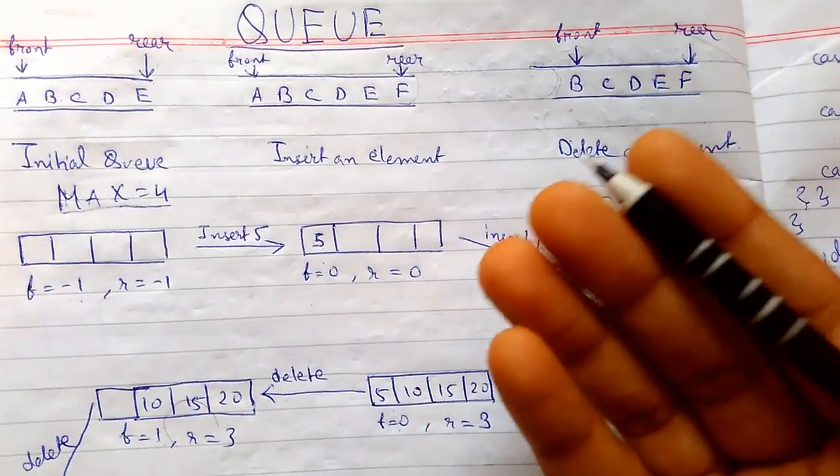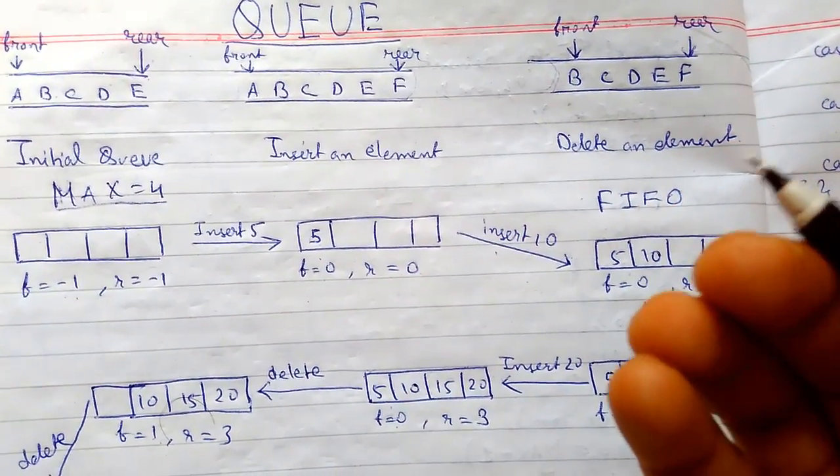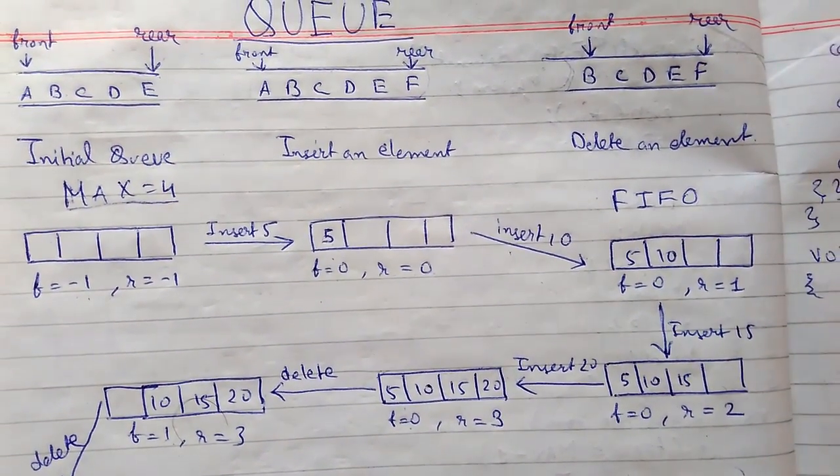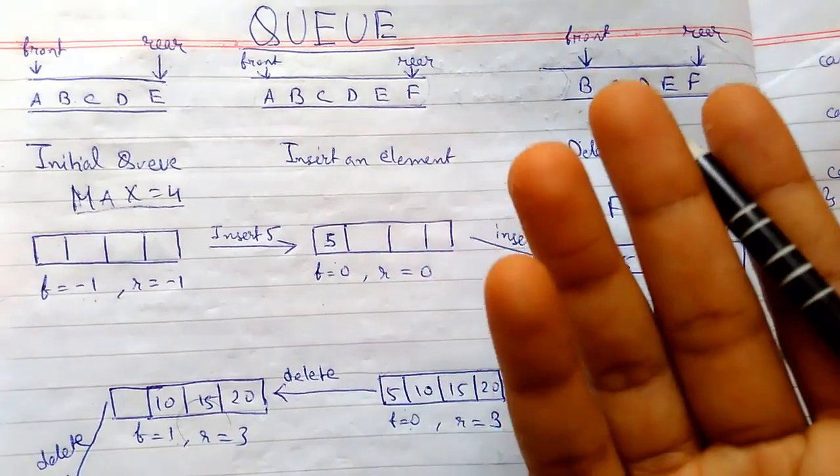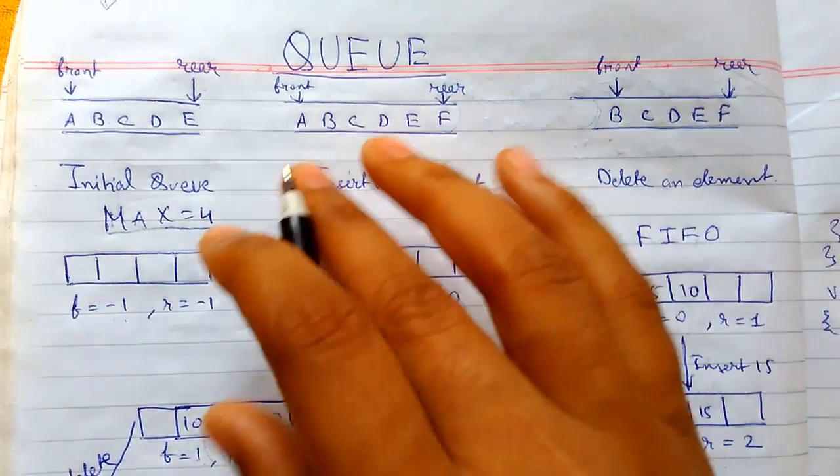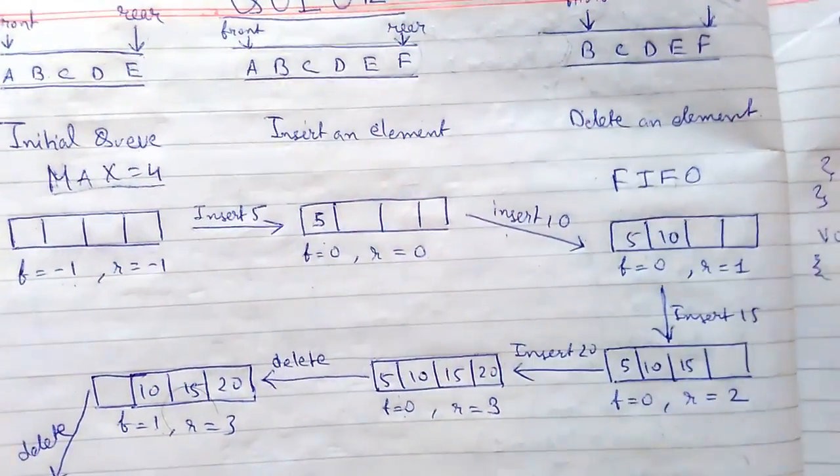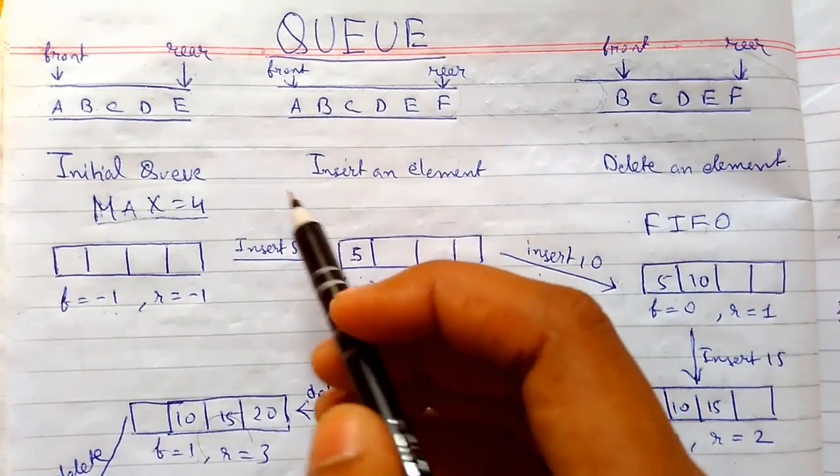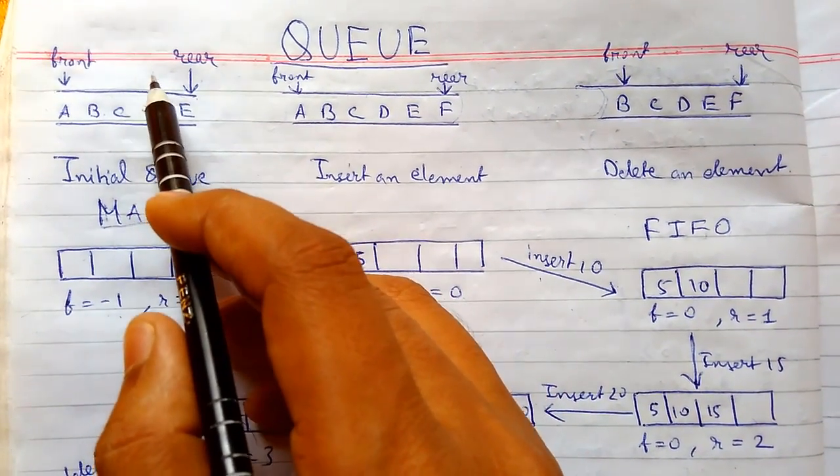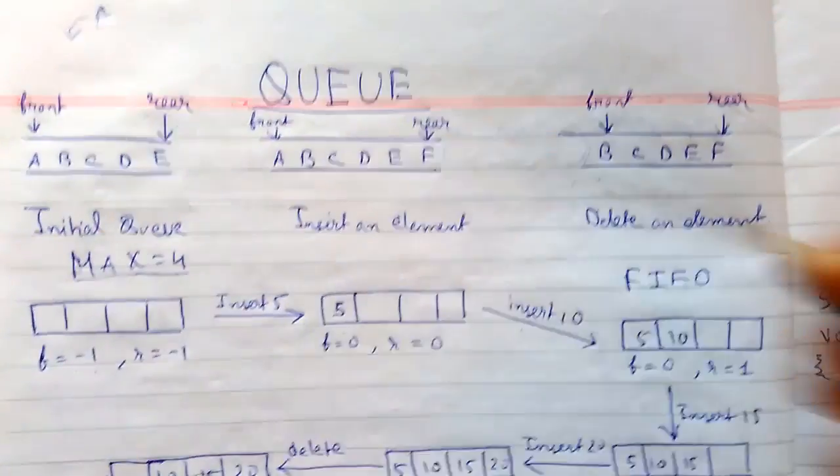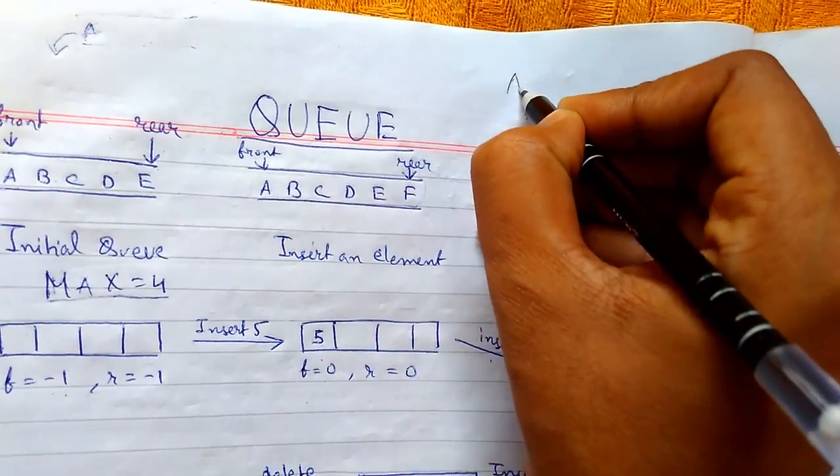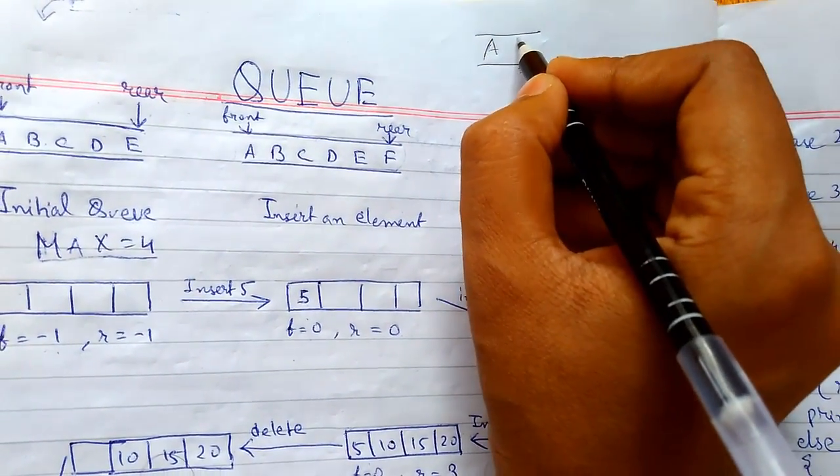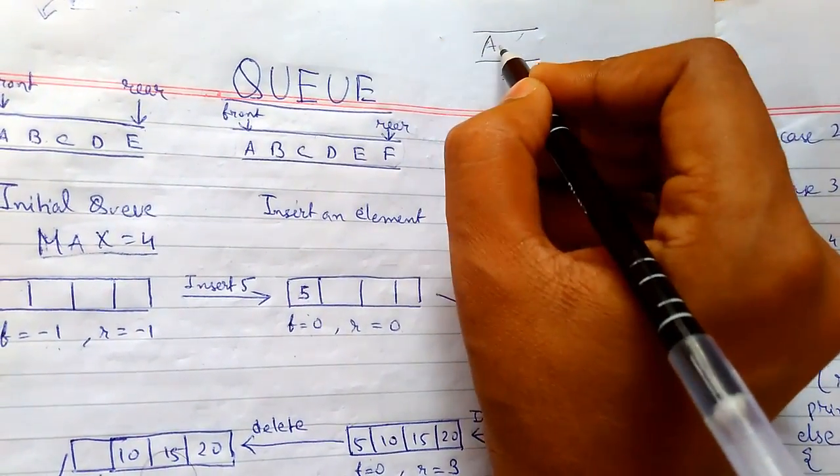We see basic examples of Queue in our daily life, like the queue of people waiting at a counter or a queue of cars at a parking. The queue of cars and persons entered into the queue at first. Suppose they entered here, the car has entered like this and it will be the first to leave. It is the first to enter and it will be the first to leave.